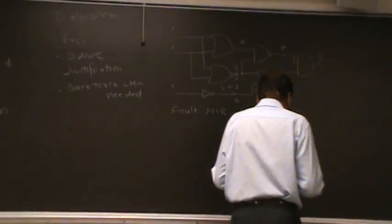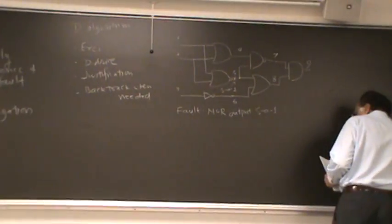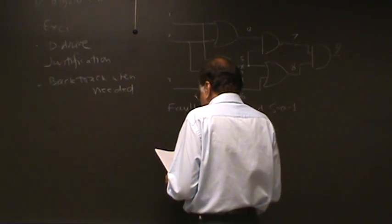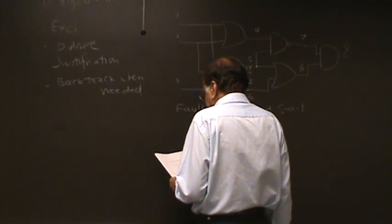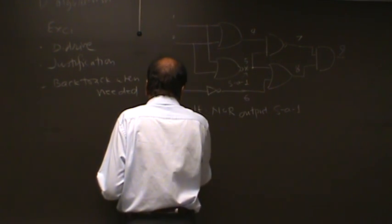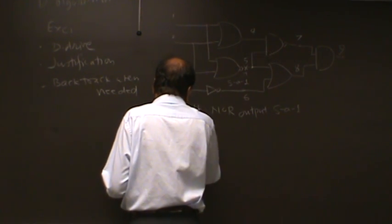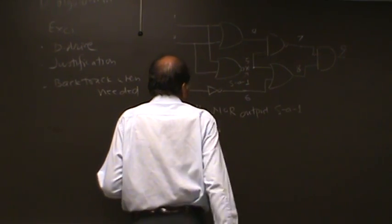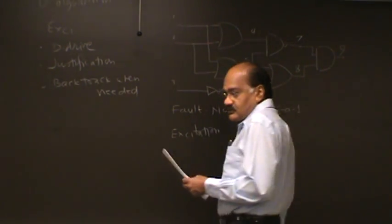This is the fault we want to test. Now the excitation part is easy. This is the second one. So we want to get a zero there.